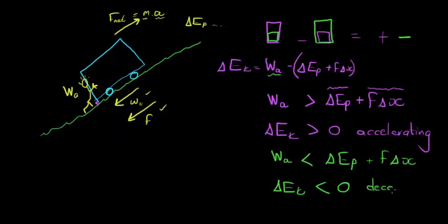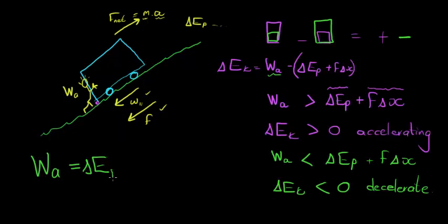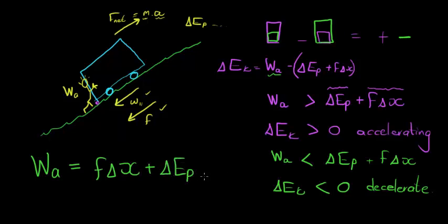If the work I'm applying is less than what is needed to change the potential energy and overcome friction, then energy must come from elsewhere — the kinetic energy will dissipate. The change in kinetic energy becomes negative, meaning the object is decelerating. To summarize: work applied first overcomes friction, then overcomes gravity (changes potential energy), and whatever is left over changes kinetic energy. If there isn't enough, the change in kinetic energy is negative.